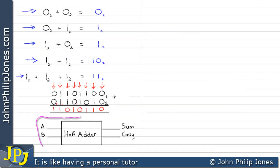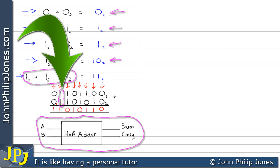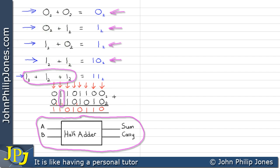Here we can see the schematic diagram of a half adder. It's called a half adder because it is only capable of adding two bits — it can perform additions like zero plus zero, zero plus one, and one plus zero. It cannot, however, add three ones: one plus one plus a carry. The name 'half adder' comes from this limitation.